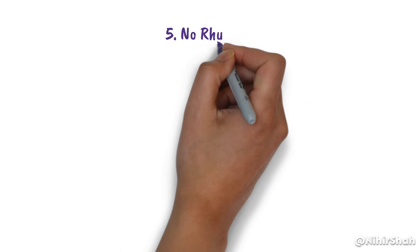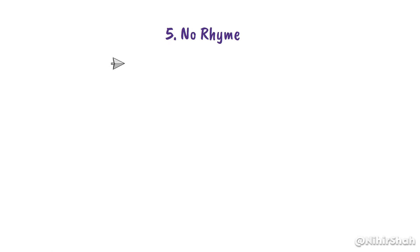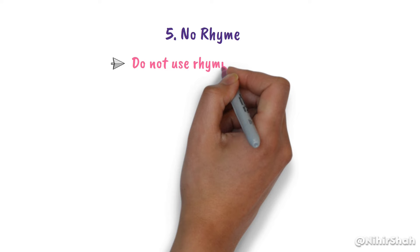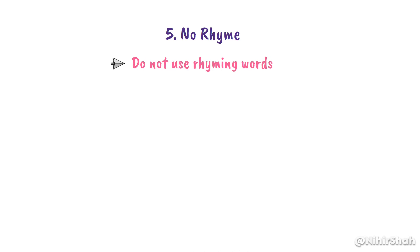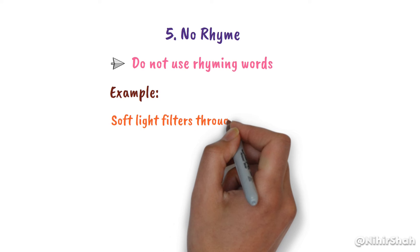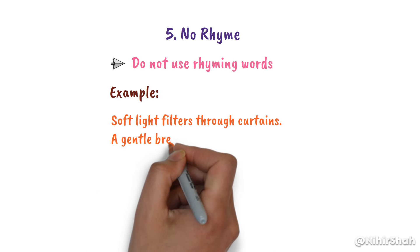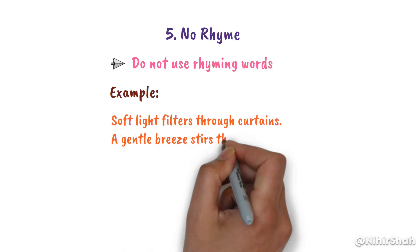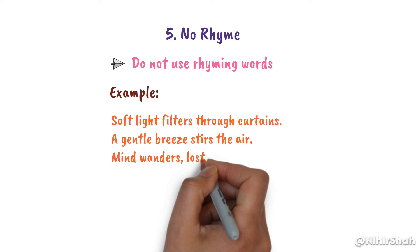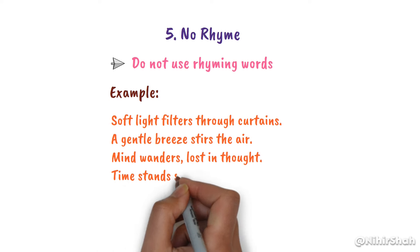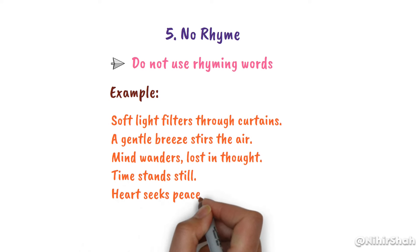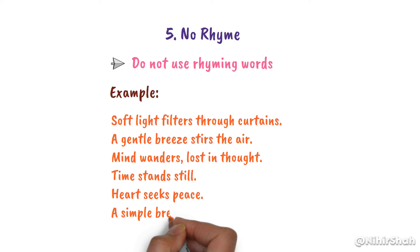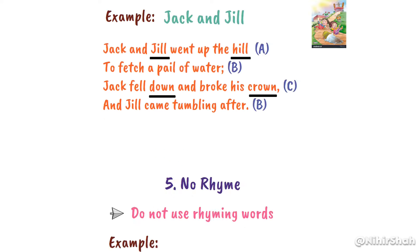And number 5, No Rhyme. Some poems do not use rhyming words at all. For example: 'Soft light filters through curtains, a gentle breeze stirs the air. Mind wonders, lost in thought, time stands still. Heart seeks peace, a simple breath, existence.' This poem does not use any rhyming words.